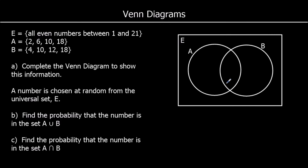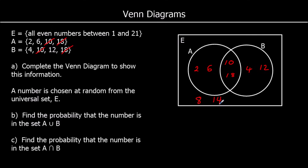In the middle — the intersection between A and B — we're going to put the numbers in both of them. So they both have a 10, so that goes in the middle, and they both have an 18, so that goes in the middle. Then what other numbers go in the A circle? We want 2 and 6. And what other numbers are in the B circle? We want 4 and 12. Remember, we wanted all even numbers between 1 and 21, so some numbers go on the outside: 8, 14, 16, and 20.